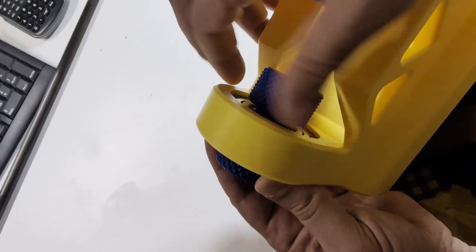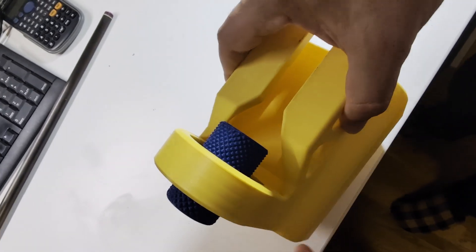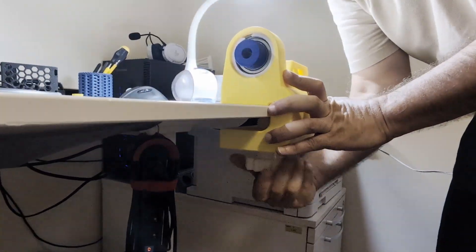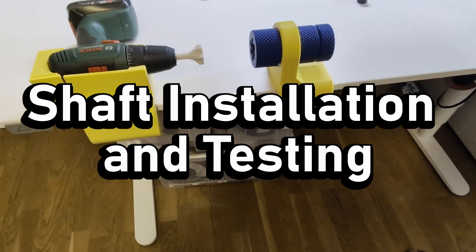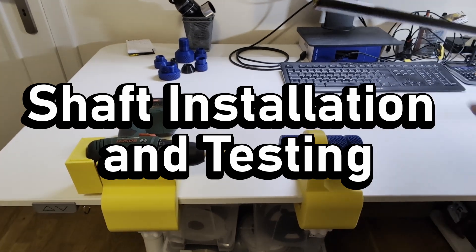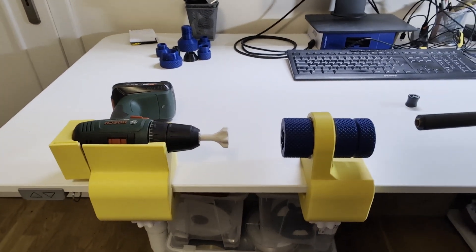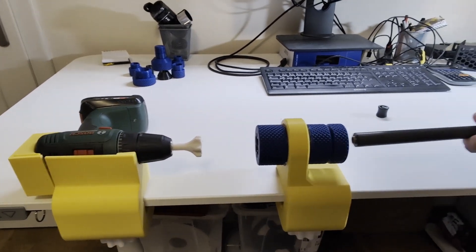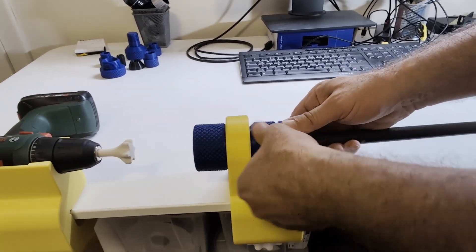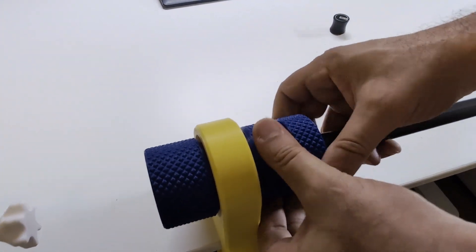And then the module mounts back to the table. Now for the fun part, assembling the shaft. I slide the shaft into the drive bearing module and tighten the screw just enough to hold it loosely. This lets me adjust it and thread it carefully onto the tip module.